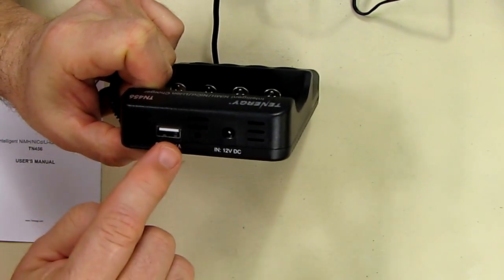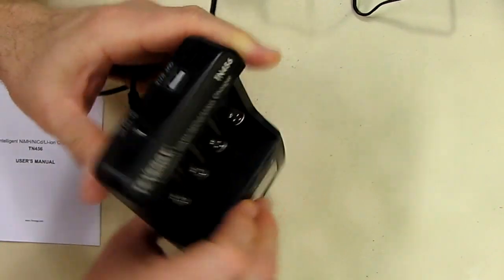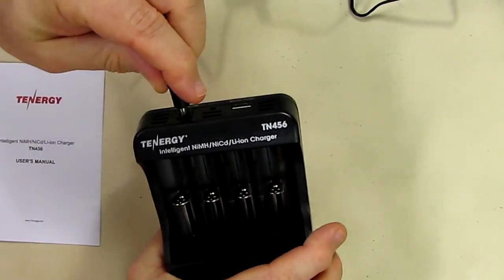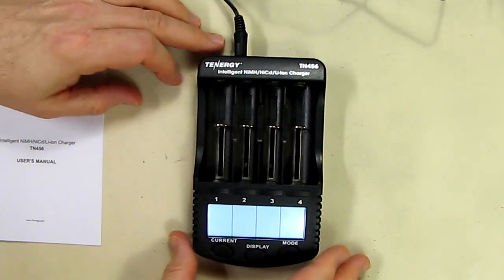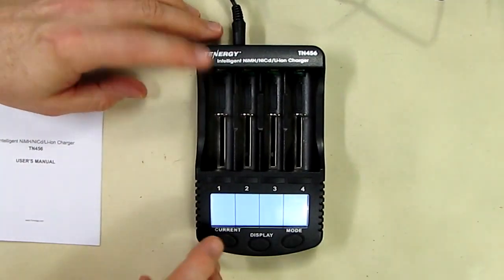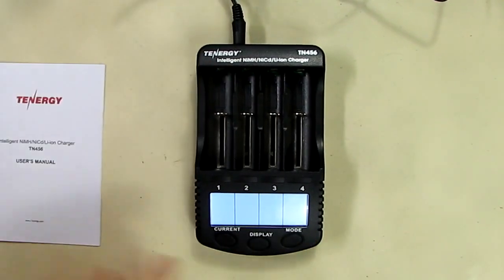That looks like a USB port so that you can charge your cell phones on it. That's nice, a lot don't have that. So let's plug that right in and you see it powers up and it says null because there's nothing hooked up to it.